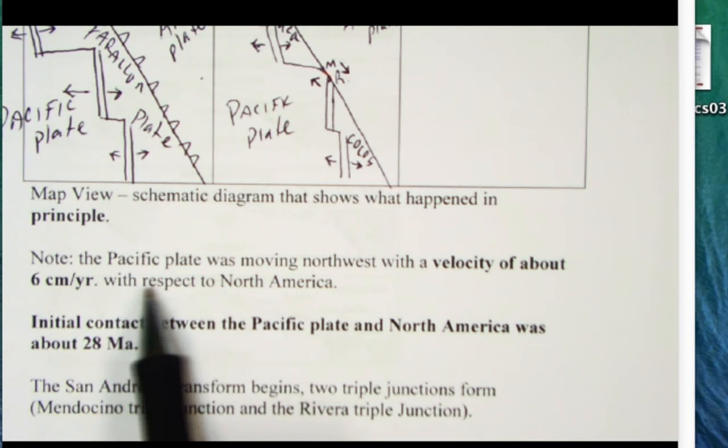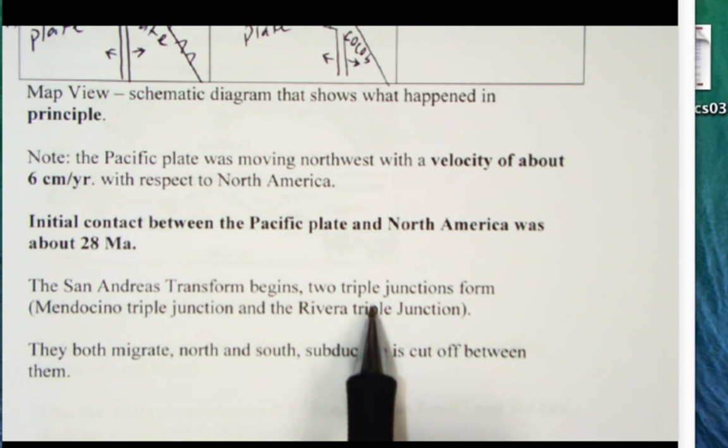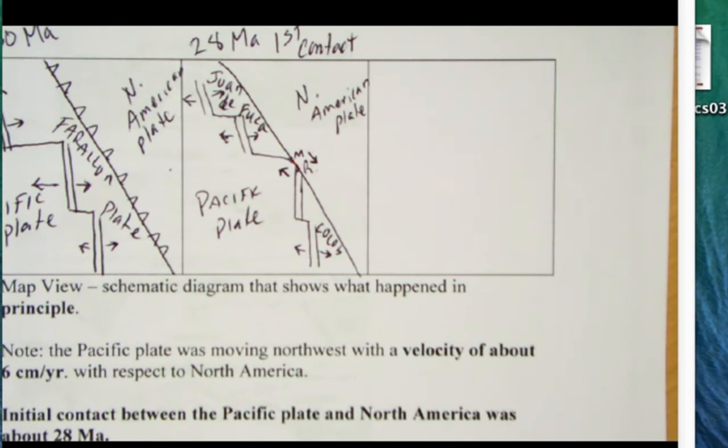I'm showing a map view and the Pacific is moving past North America at velocity about six centimeters per year with respect to North America. The San Andreas transform begins, two junctions, two triple junctions form - Mendocino in the north, Rivera in the south. The reason they're called triple junctions is because at each junction three tectonic plates meet at one point. For the Rivera it's Cocos, Pacific and North American.